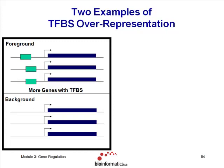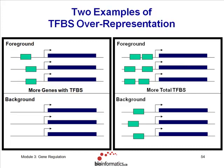One type of over-representation analysis asks: are there more annotated genes with transcription factor binding sites in the foreground set than in the background set? That's exactly the same as asking are there more genes with GO term X in this set than that set. But in transcription factor binding sites, we also have the added possibility of asking whether the frequency of binding sites is higher than background — more binding sites on average per nucleotide in this set of genes than in the background.